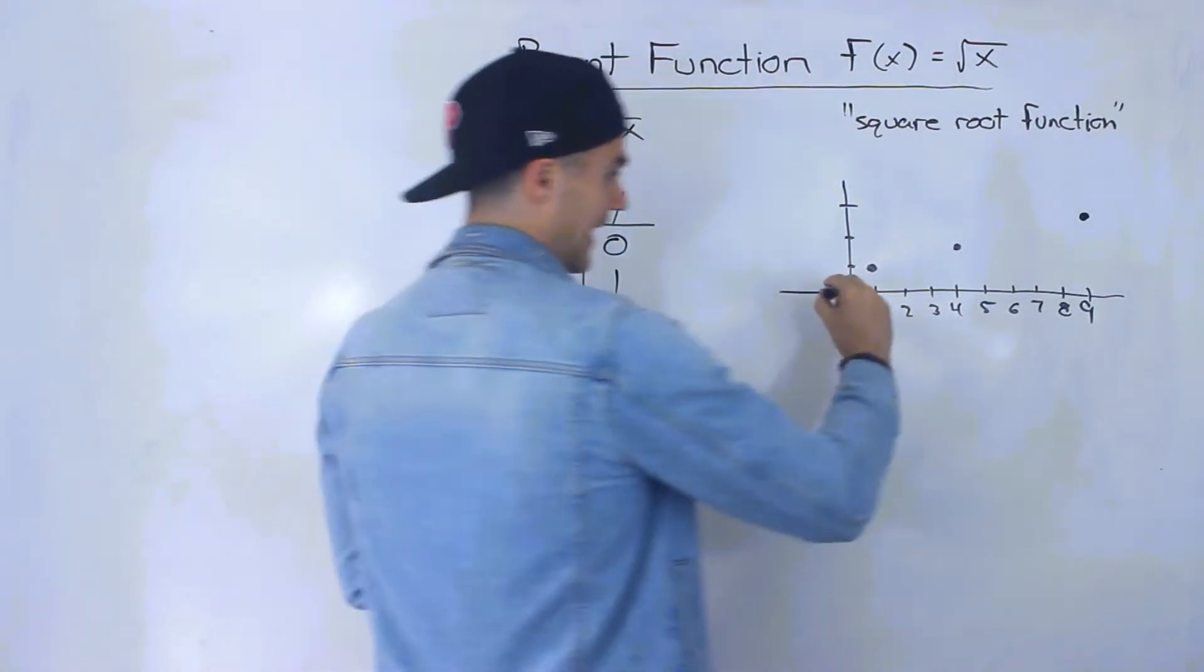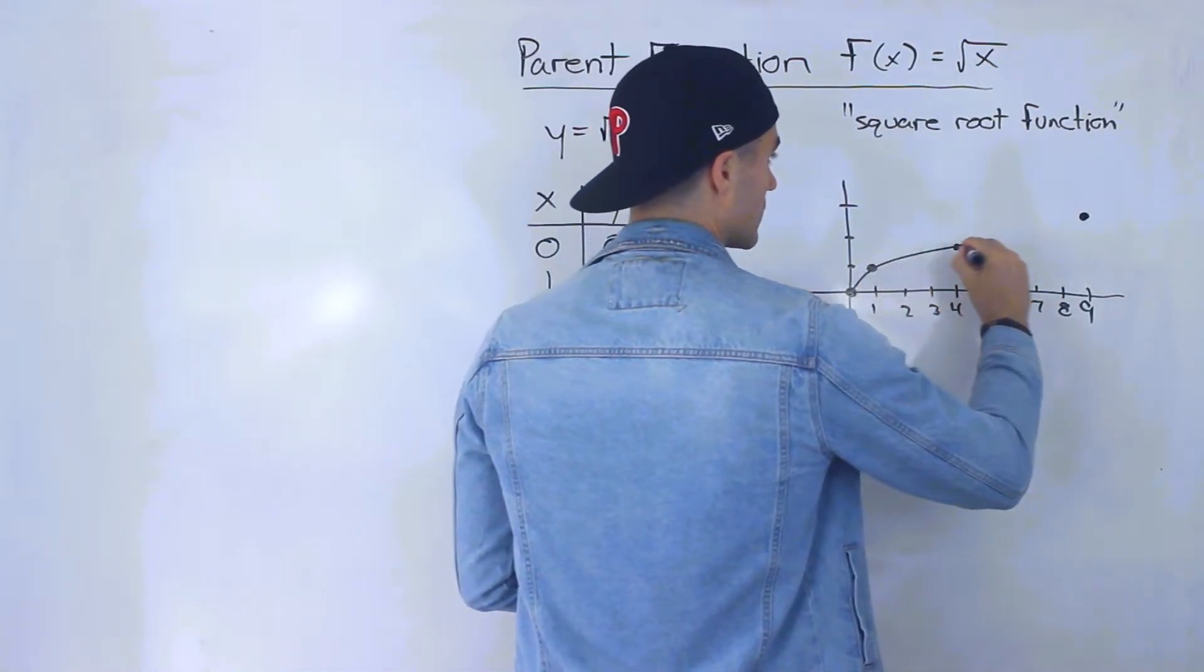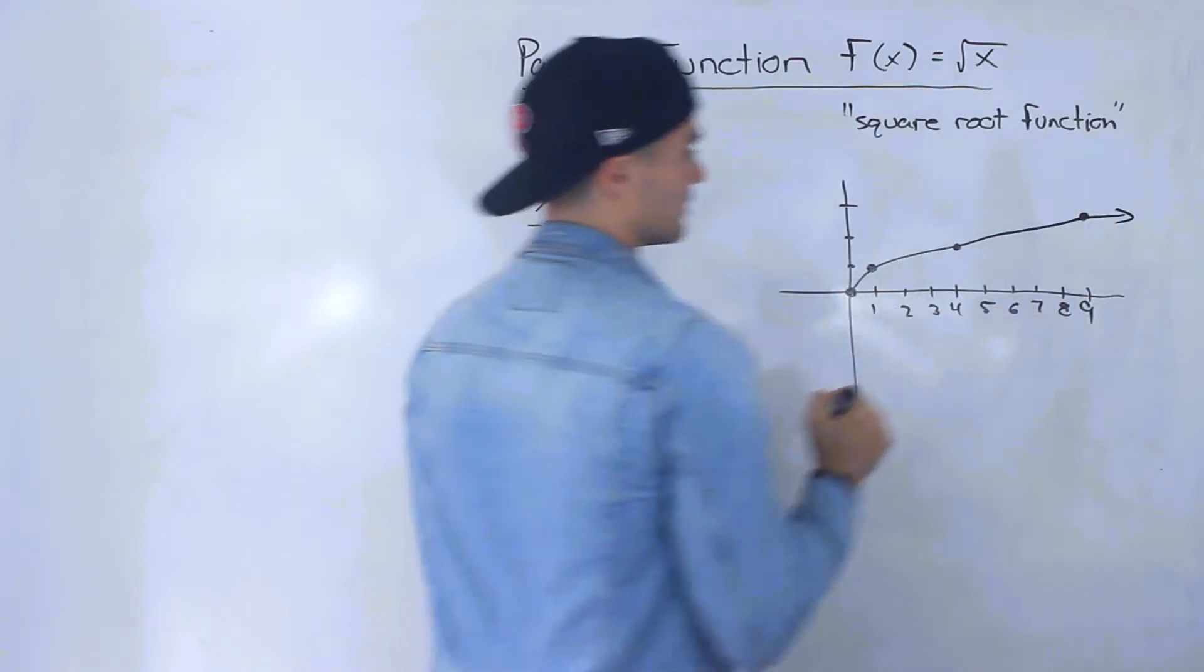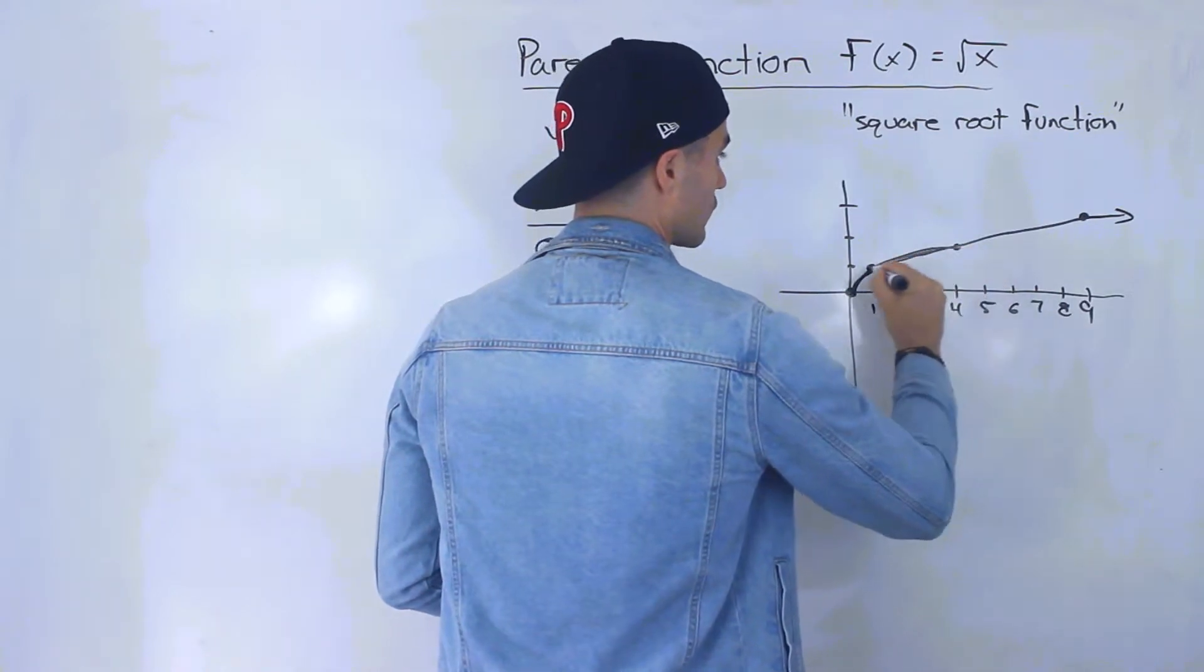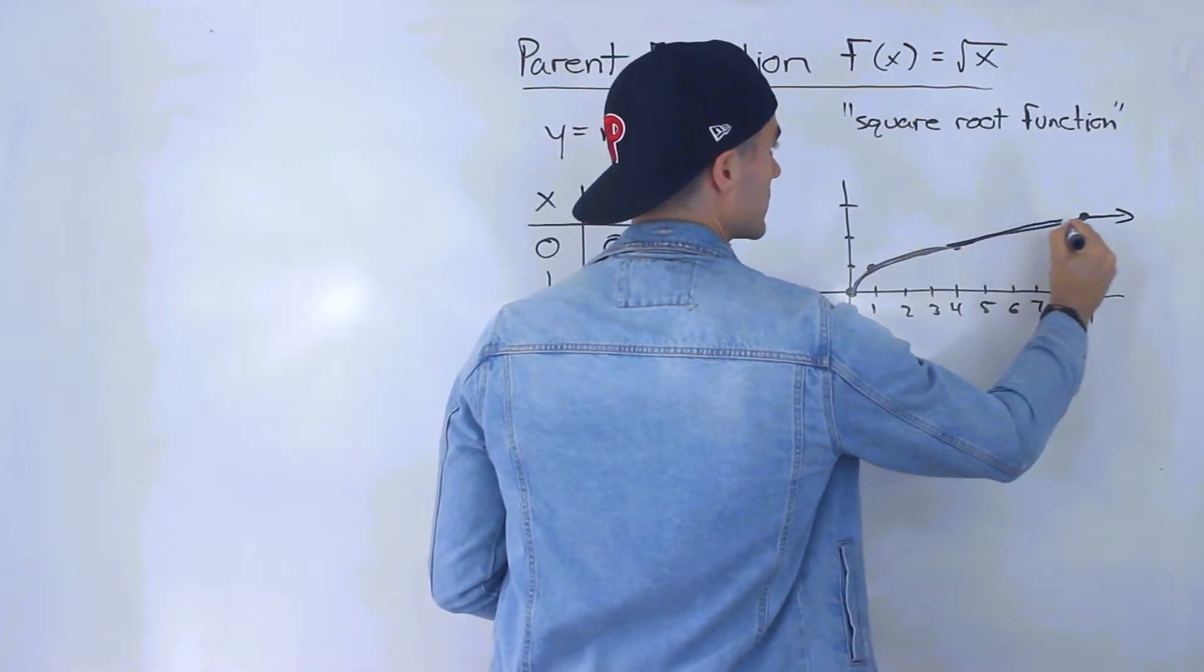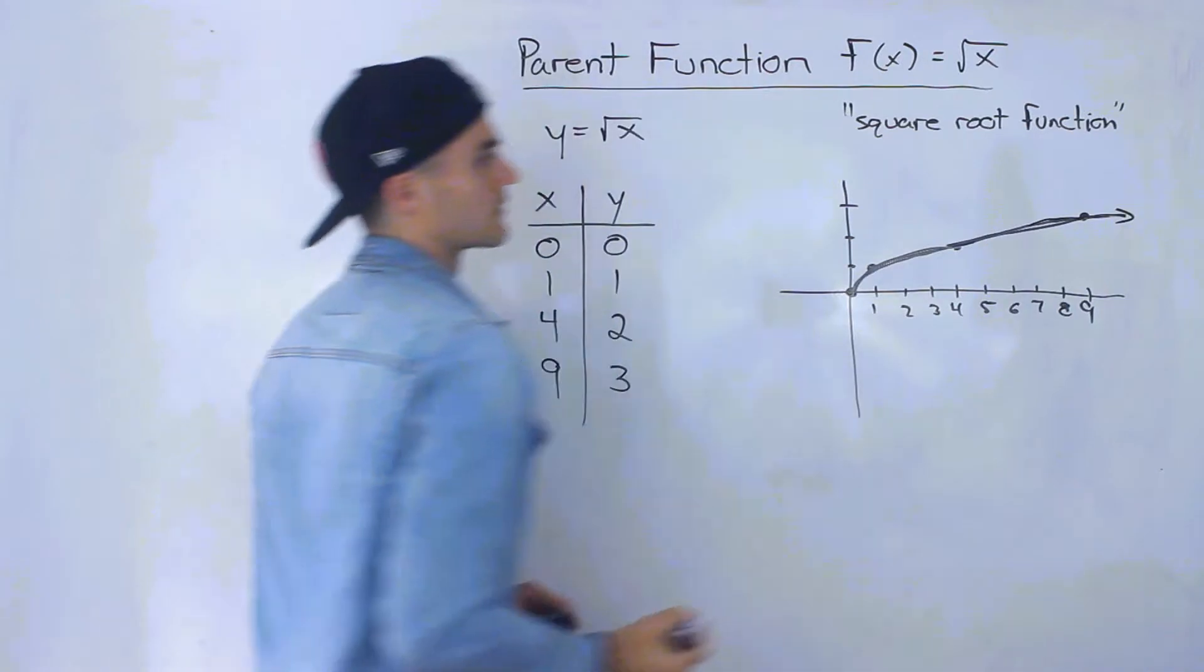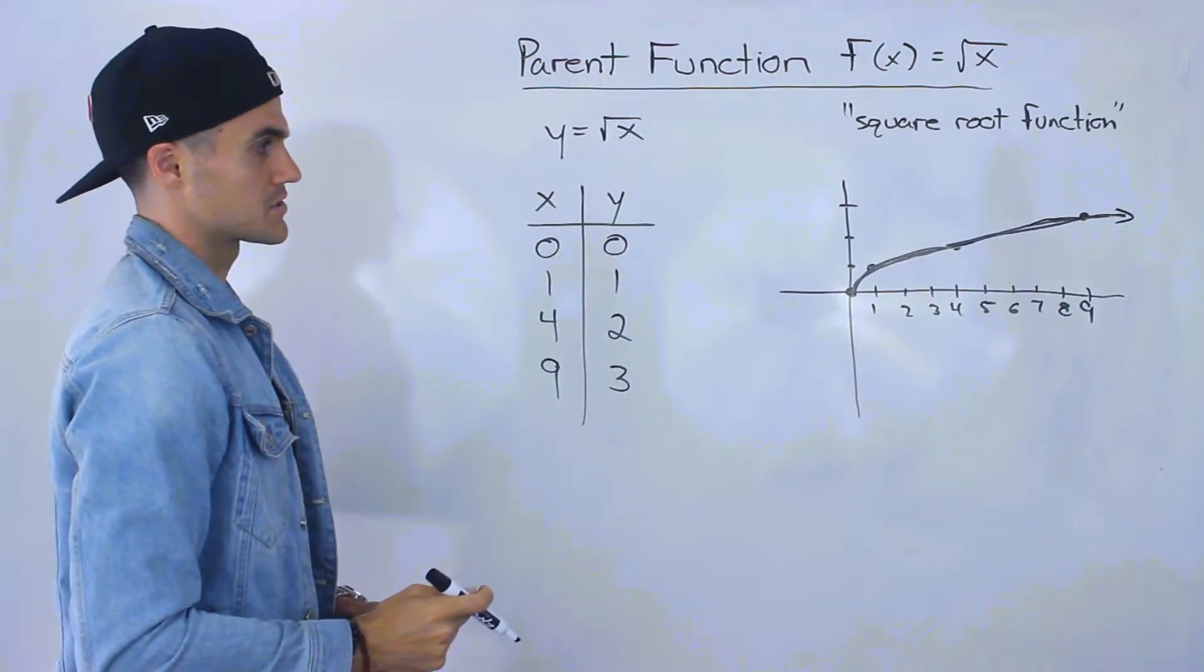So if we connect all of these, this function is looking like that. This should be more of a smooth curve here. But yeah, anyway, hopefully you see how that looks.